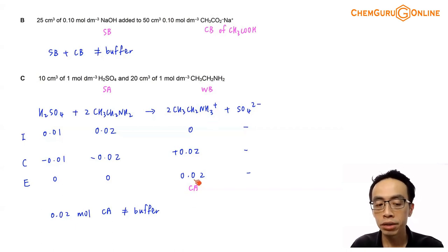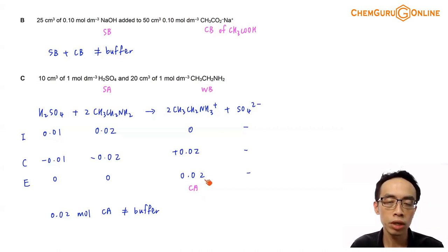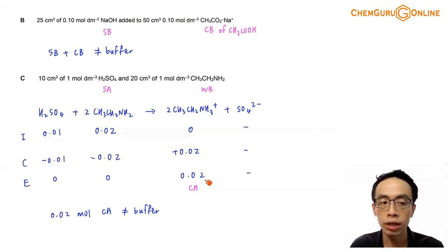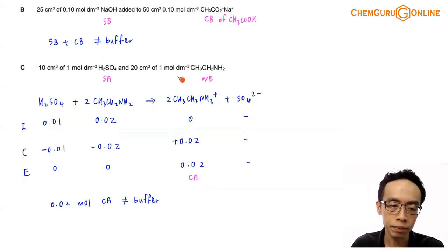Since I'm only left with a conjugate acid, the conjugate acid by itself is not capable of maintaining pH, because a buffer needs to be a mixture of a conjugate acid-base pair. So therefore C is also not the answer.